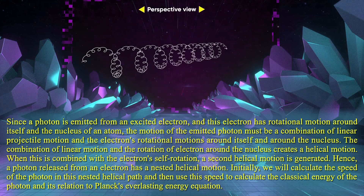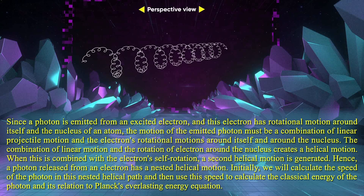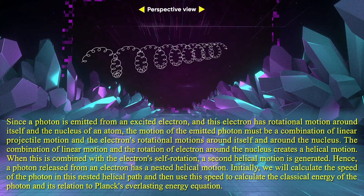Hence, a photon released from an electron has a nested helical motion. Initially, we will calculate the speed of the photon in this nested helical path and then use this speed to calculate the classical energy of the photon and its relation to Planck's everlasting energy equation.